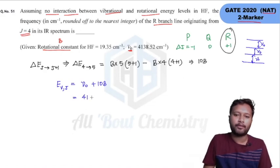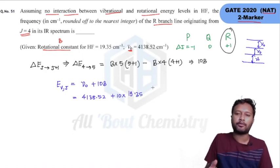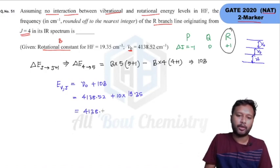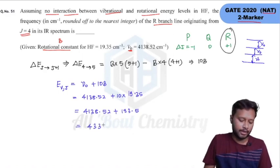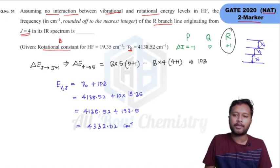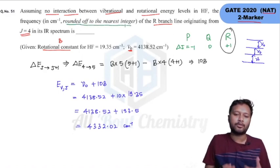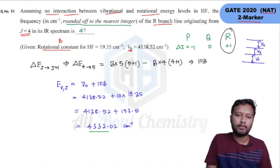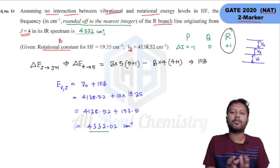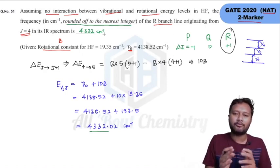Substituting the values: μ₀ = 4138.52 cm⁻¹ and 10B = 10 × 19.35 = 193.5 cm⁻¹. Adding these gives 4138.52 + 193.5 = 4332.02 cm⁻¹. Since the question asks to round off to the nearest integer, the correct answer is 4332 cm⁻¹.